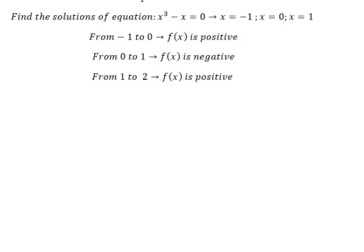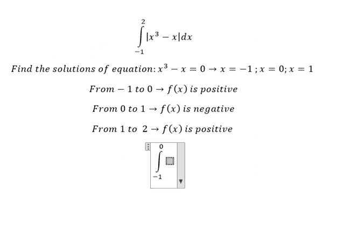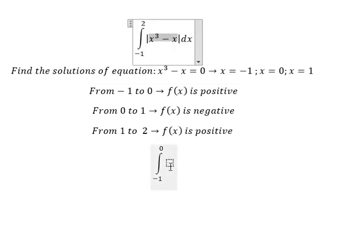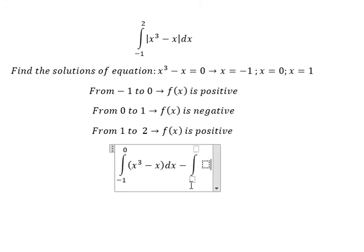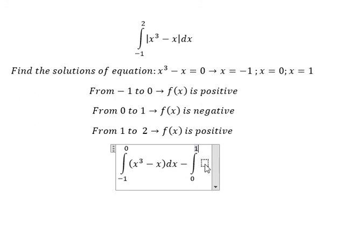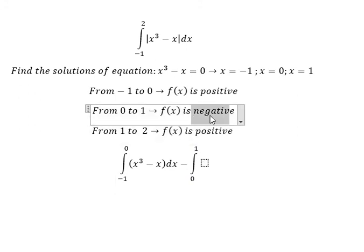So we have three intervals in here. The first one, that is from negative one to zero. And then we put the negative from zero to one because we want to change the negative into the positive.